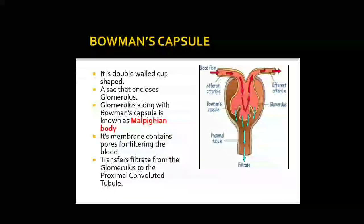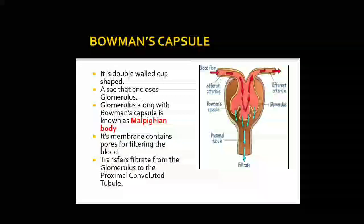Now let us see the Bowman's capsule. The first part of your nephron is the Bowman's capsule. You can see it is a double-walled cup-shaped structure. Inside that there is the glomerulus. So it has an outer covering and an inner covering where the glomerulus lies — it is a sac that encloses the glomerulus.